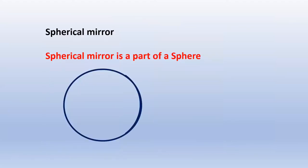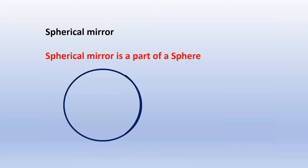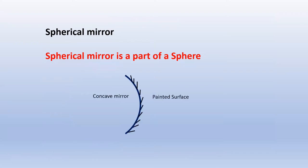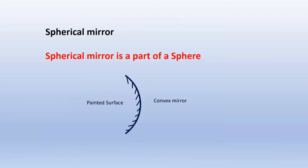Spherical mirrors are part of a sphere — the mirror which is made from a sphere is a spherical mirror. If we paint on the outer surface, it is called a concave mirror, and the inner surface acts as the mirror. If we paint the inside, then the external surface acts as a mirror — this is a convex mirror.